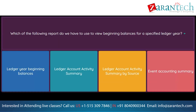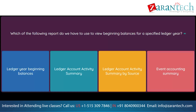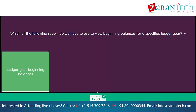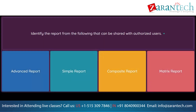Question: Which of the following reports do we have to use to view beginning balances for a specified ledger year? Option 1: ledger year beginning balances. Option 2: ledger account activity summary. Option 3: ledger account activity summary by source. Option 4: event accounting summary. Question: Identify the report from the following that can be shared with authorized users. Option 1: advanced report. Option 2: simple report. Option 3: composite report. Option 4: matrix report.